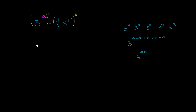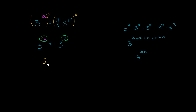So we can rewrite the left-hand side as 3 to the 5a power. And that is going to be equal to — well, if you take something that's a fifth root and raise it to the fifth power, you're just left with what was under the radical — so that equals 3 squared. Now things become a lot clearer: 3 to the 5a needs to equal 3 squared. We have the same base on both sides, so the exponents must be equal. That means 5 times a equals 2, and dividing both sides by 5 gives us a equals 2 fifths.